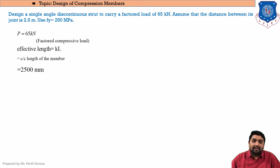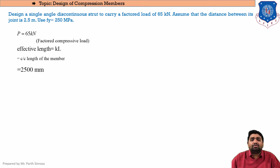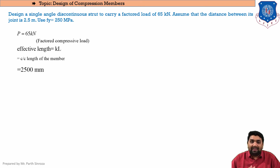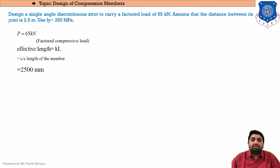The next step is to find the effective length, i.e., the kL ratio. The center-to-center length is given as 2500 mm. Since supports are not mentioned, we assume k = 1 in every design case. Therefore, the effective length comes out to be 2500 mm.